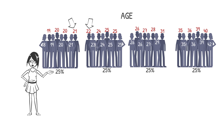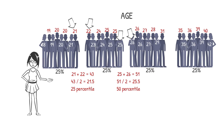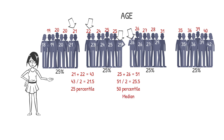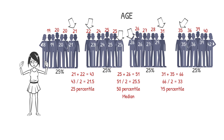The average of 21 and 22 is 21.5 years, which is the 25th percentile of this group. We can also calculate the 50th percentile, which is also known as the median, and the 75th percentile.